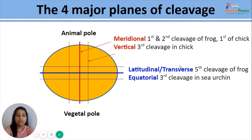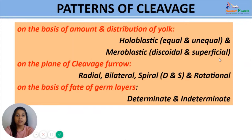We have different patterns of cleavage. On the basis of amount and distribution of yolk, cleavage can be holoblastic — which can be equal or unequal — or meroblastic, which can be discoidal or superficial. On the basis of plane of cleavage, patterns can be radial, bilateral, spiral (dextral or sinistral), or rotational. On the basis of fate of germ layers, the pattern can be determinate or indeterminate.